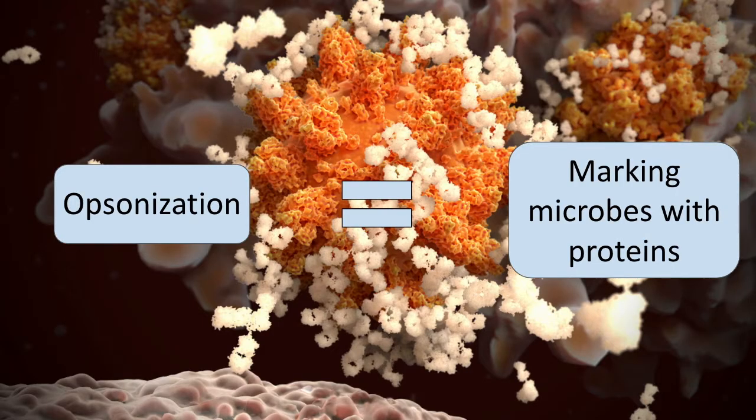Another way the efficiency of phagocytosis is enhanced is when microbes are opsonized by specific proteins called opsonins. Phagocytes express high affinity receptors and are strongly attracted to these opsonins. So opsonins are the proteins that mark pathogens with an eat-me sign, and then the phagocytes recognize that eat-me sign and will go and engulf those cells.